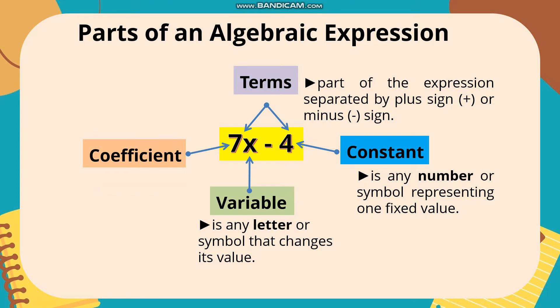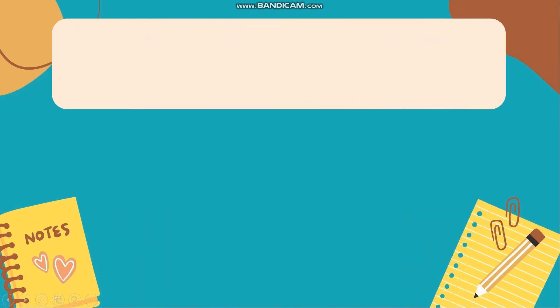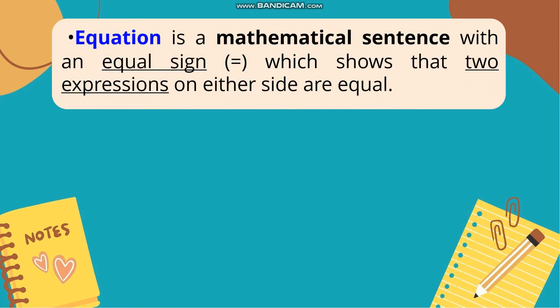Ang 7x is the coefficient. Coefficient is a number multiplied by a variable — tatandaan natin na ito ay combination of number and letter. Equation is a mathematical sentence with an equal sign, which shows that two expressions on either side are equal. Ang equation ay mathematical sentence — meaning may equal sign at answer, at makikita sa equation na meron itong two expressions sa magkabilang side na equal ang value.